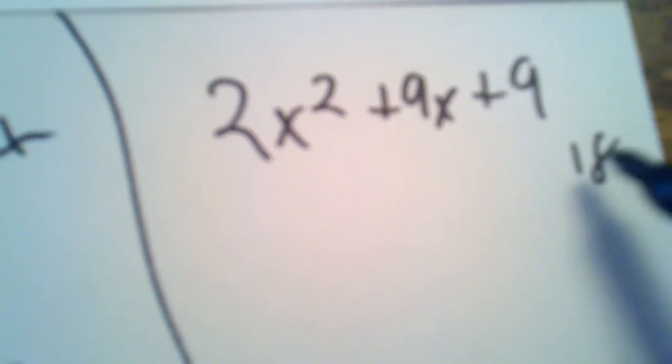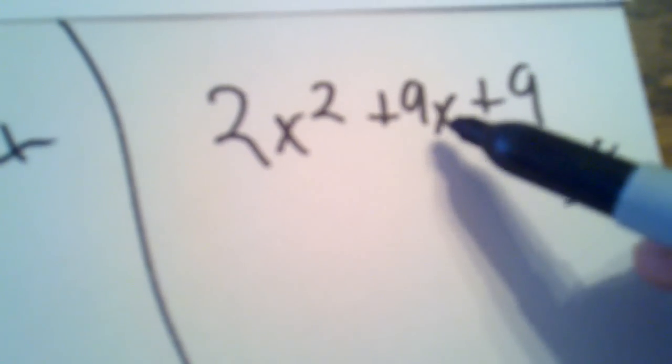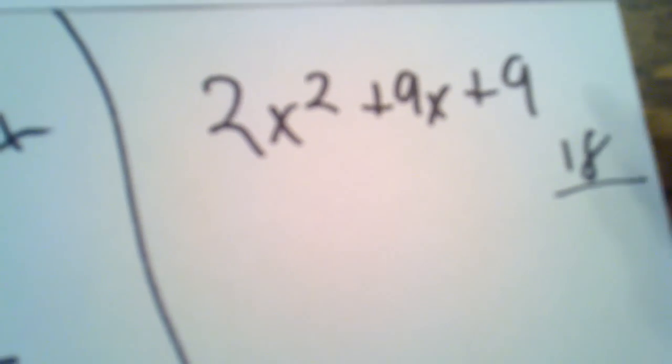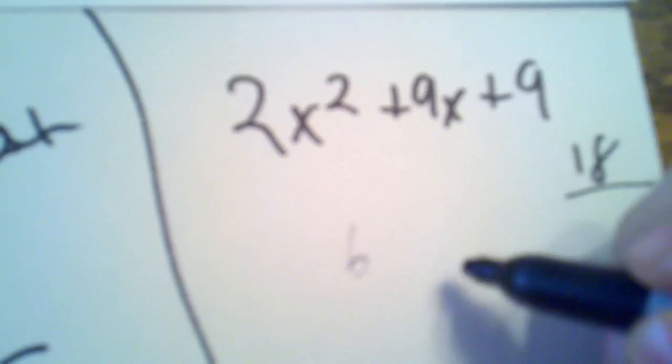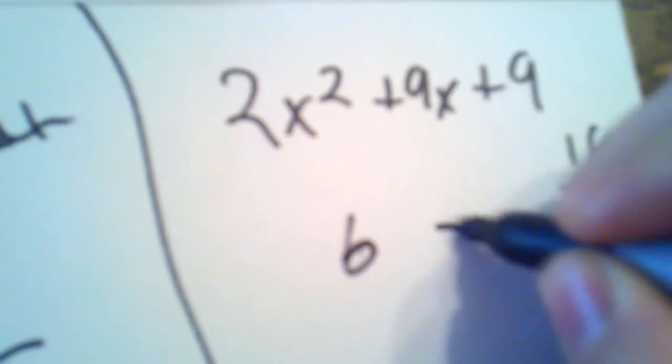Now, what multiplies to get 18 and adds together to get a positive 9? Well, that would be a 6 and 3.